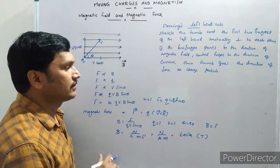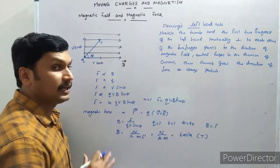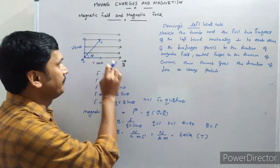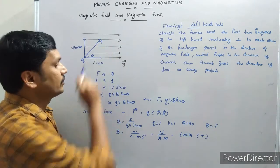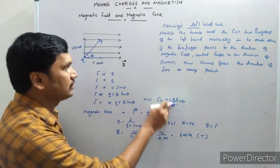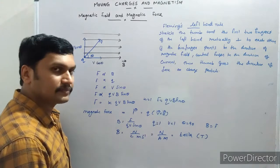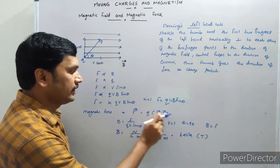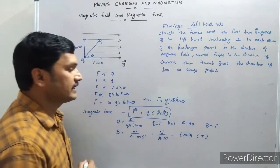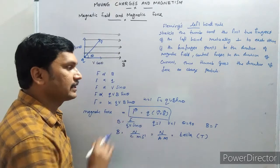Since force is a vector quantity, we can express this in vector form. The angle between velocity V and magnetic field B is theta. We can write V·B·sine theta as the magnitude of the cross product V×B. Therefore the vector form of the force is F = Q(V×B). This is the magnetic Lorentz force equation in vector form.